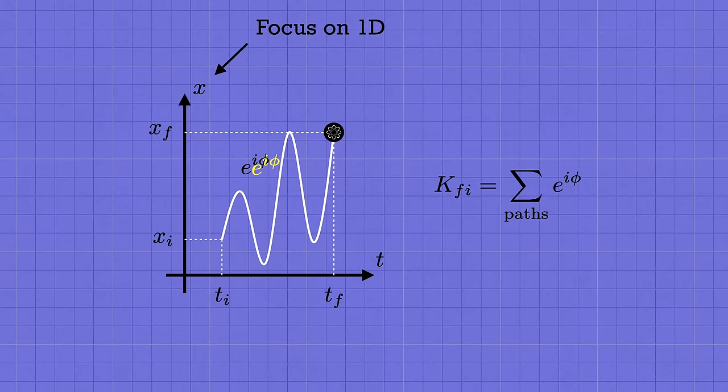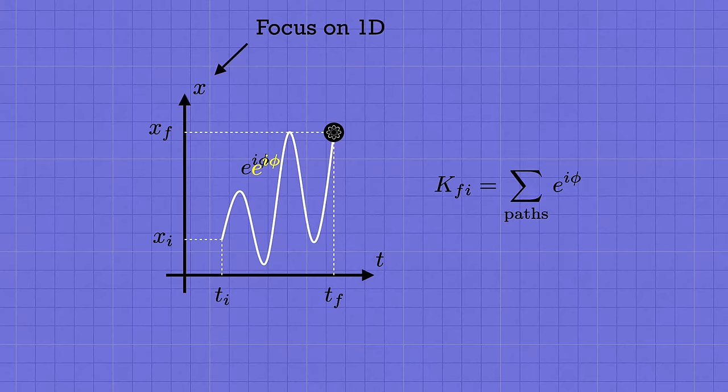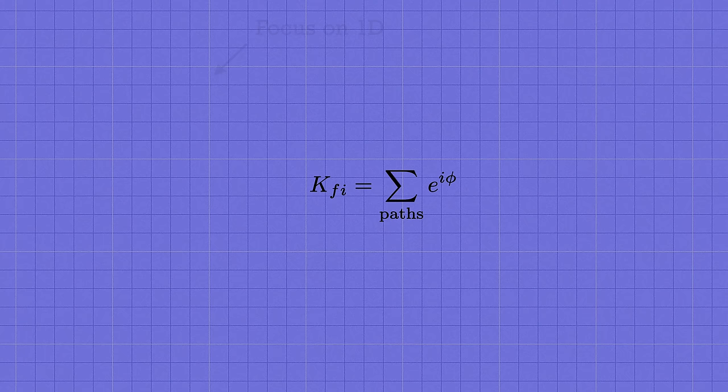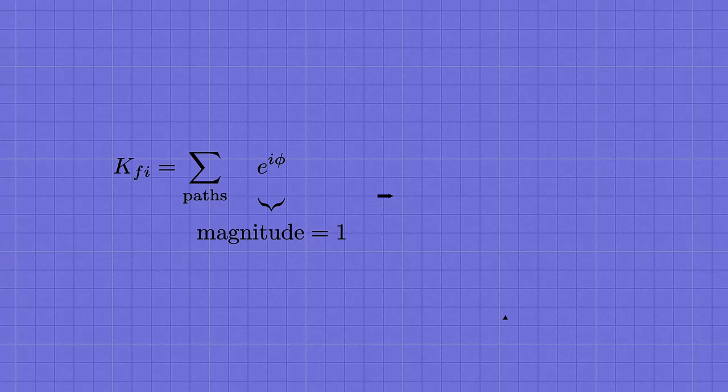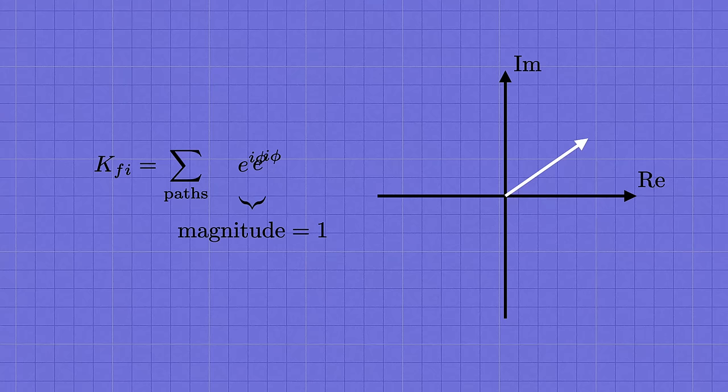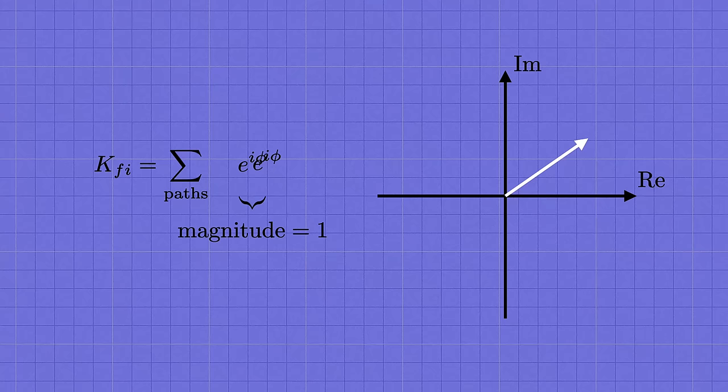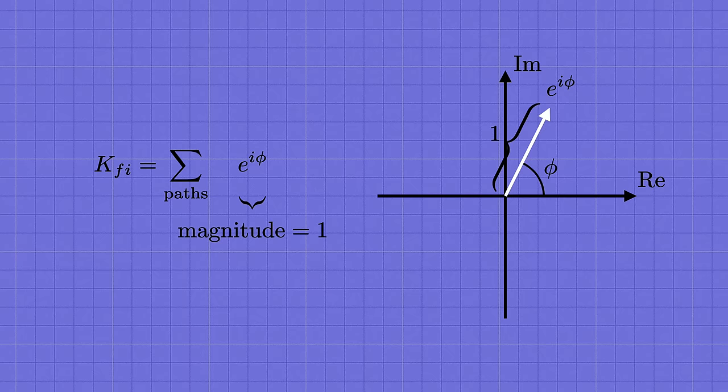Strange as it sounds, this prescription is at least totally democratic, in the sense that each term in the sum is a complex number with the same magnitude, one. You can picture e to the i phi as an arrow in the complex plane. In other words, we draw a picture with the real direction along the horizontal axis and the imaginary direction along the vertical axis. Then e to the i phi is an arrow of length one that points at an angle phi. Different trajectories will contribute arrows pointing at different angles, but they all have the same length of one. The question is, what angle phi are we supposed to assign for each possible path?